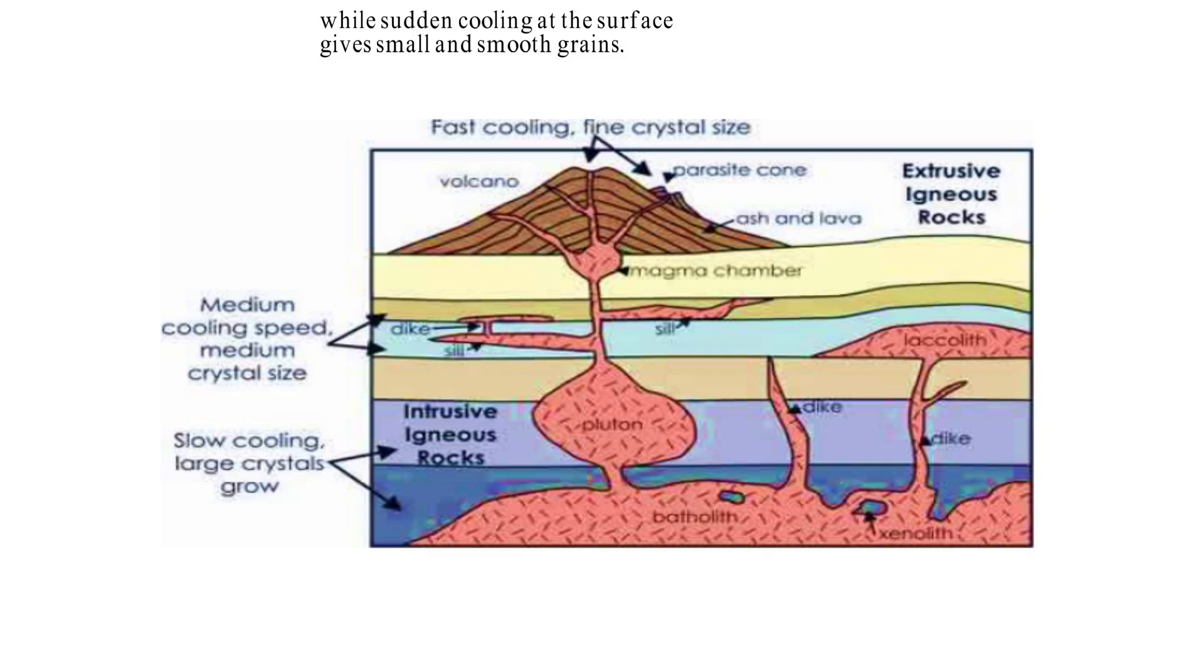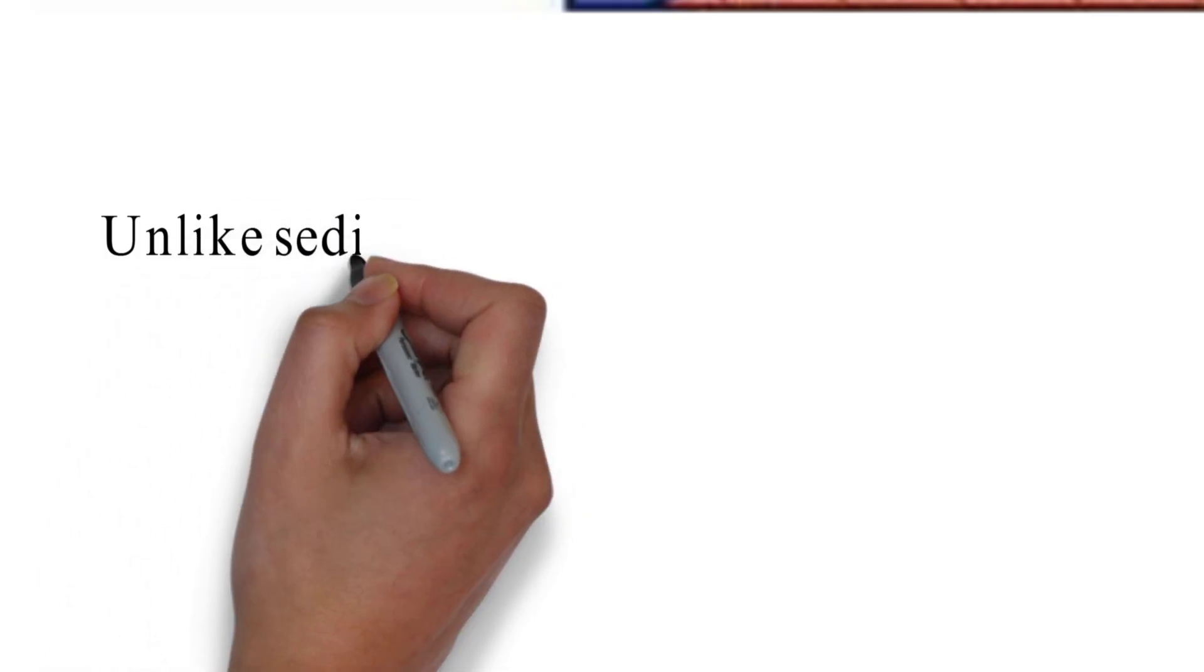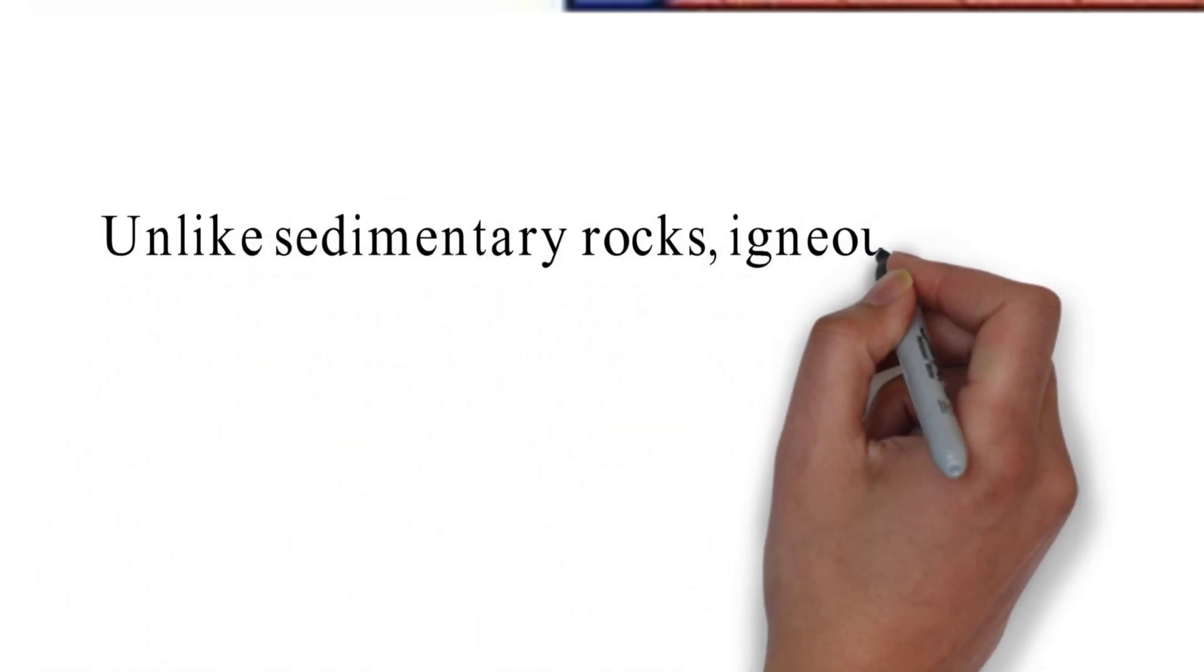Sometimes when the lava moves upwards, a portion of the same may tend to move in a horizontal direction wherever it finds a weak plane and then it may get rested in different forms. In some cases it develops into a saucer shape concave to the sky body, it is called lapolith. Sometimes a wave of mass of intrusive rocks is formed in the form of pillar-like shape. They are called dikes. They are almost perpendicular to the ground and cool in the same position to develop a wall-like structure. These dikes are found in Western Maharashtra area, while the horizontal bodies of intrusive igneous rocks are called sills.